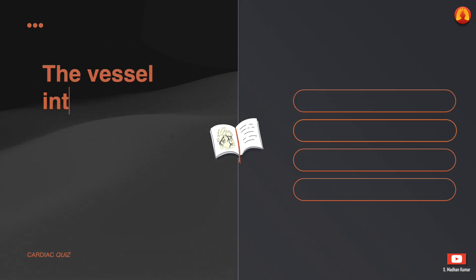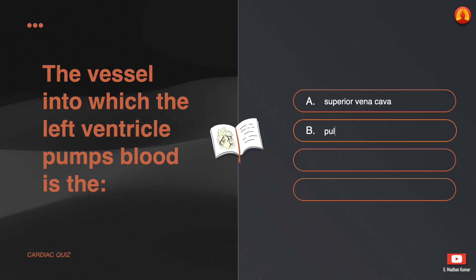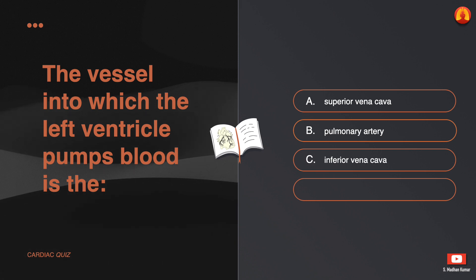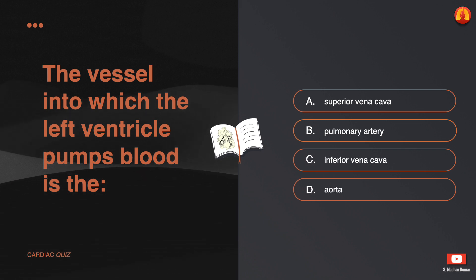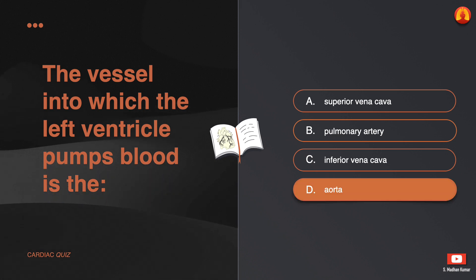The vessel into which the left ventricle pumps blood is the: A. Superior vena cava. B. Pulmonary artery. C. Inferior vena cava. D. Aorta. The correct answer is: aorta.